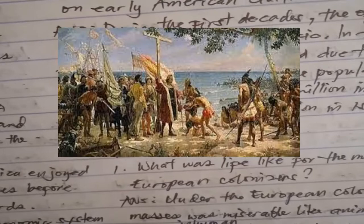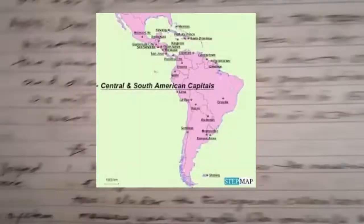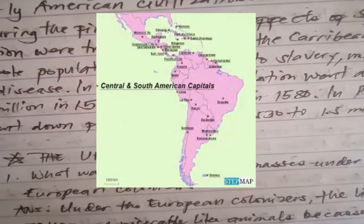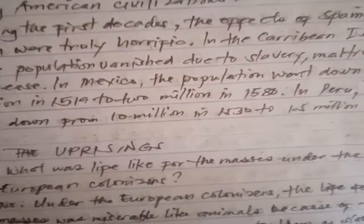These expeditions paved the way for Europe's colonization of the Americas and Asia, led by Spain and Portugal, thus extending the territories or colonies of the European kingdoms. Next topic: Central and South America. What were the conditions in Central and South America before the arrival of the Europeans?